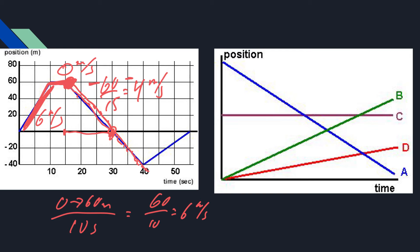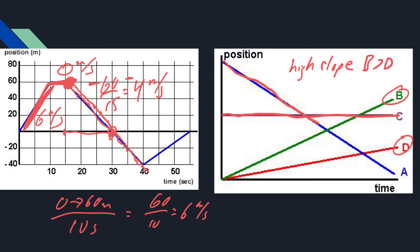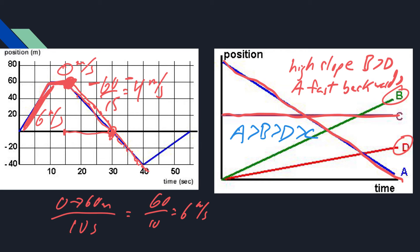Another situation you might see is just comparing things. For example, if we look at a graph with lines B and D, since B has a greater slope, it's going faster. C is obviously not moving because the position stays the same — zero slope. A, however, is actually moving the fastest of them all because its slope is the greatest — but it's moving backwards, so it's moving fast but in reverse. If they ask you to rank fastest to slowest, you'd say A is faster than B, which is faster than D, which is faster than C.